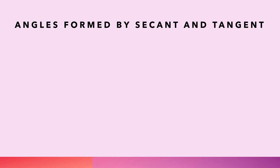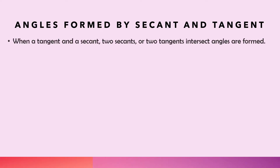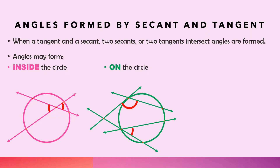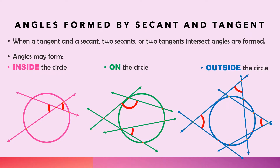Now that we already know the definition of secant and tangent, we can proceed with the angles formed by secant and tangent. When a tangent and a secant, or two tangents, or two secants intersect, angles are formed. These angles may form inside the circle, on the circle, or outside the circle.